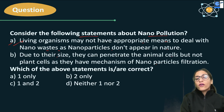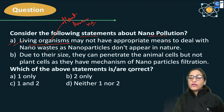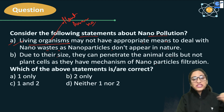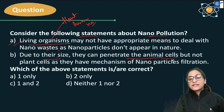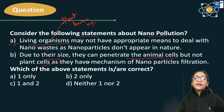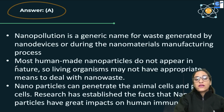Statement 1 is correct: no living organism — whether plant, animal, or microorganism — has an appropriate mechanism from nature to filter nanoparticles and nanowaste. Statement 2 is wrong: nanoparticles can penetrate both animal and plant cells. There is no difference between animal and plant cells in terms of nanoparticle filtration mechanism. So your answer is A only.